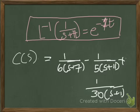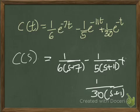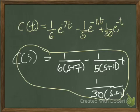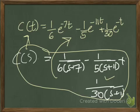You can now easily find out the inverse Laplace of the following terms. For the transfer function resolved into partial fractions, applying the inverse Laplace gives: Laplace inverse of C(s) = c(t). Applying the formula term by term: c(t) = (1/6)e^(−7t) − (1/5)e^(−11t) + (1/30)e^(−t). This is the main equation you will use.